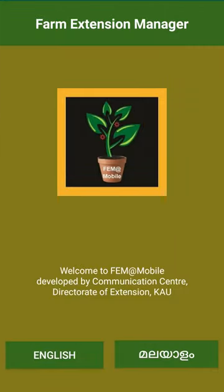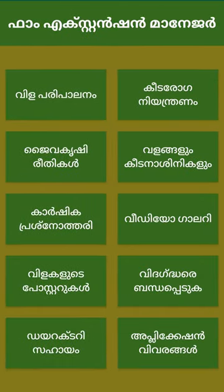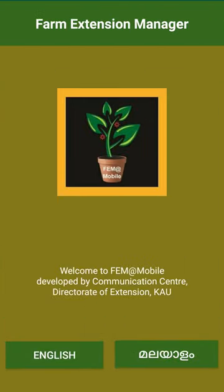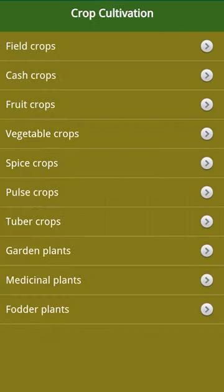To cater to different users' needs, we have developed it in both English and Malayalam languages. The information under the mobile application is classified under 10 different sections. The first section is on crop cultivation.